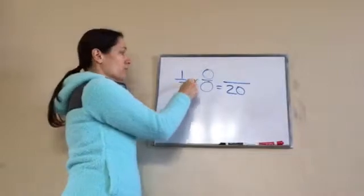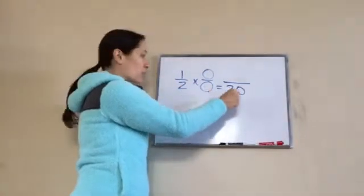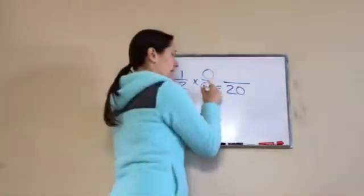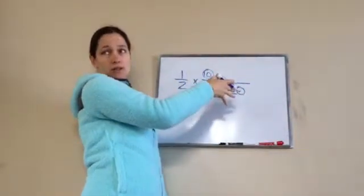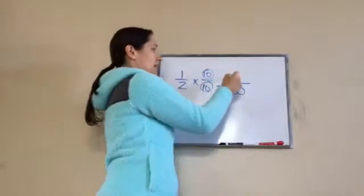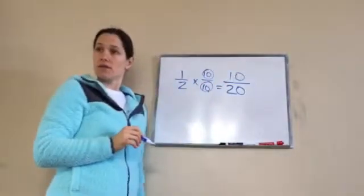So, 2 times what equals 10? 10. 10, okay? So, since I did 10 on the bottom, I have to do 10 on the top for it to be equal measurements. Mm-hmm. So, 1 times 10 is 10. Okay?